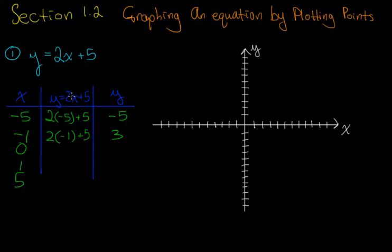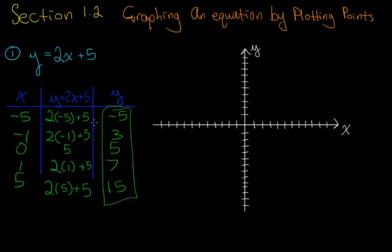2 times 0 is 0 plus 5 is 5. 2 times 1 is 2 plus 5 is 7. And 2 times 5 is 10 plus 5 is 15. So now what we do is we plot this number at these points on x.